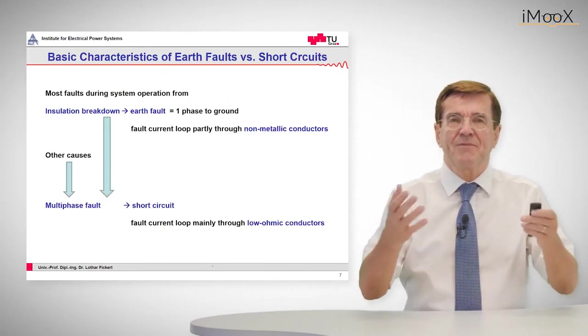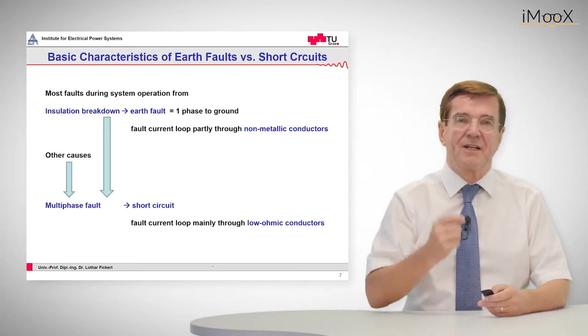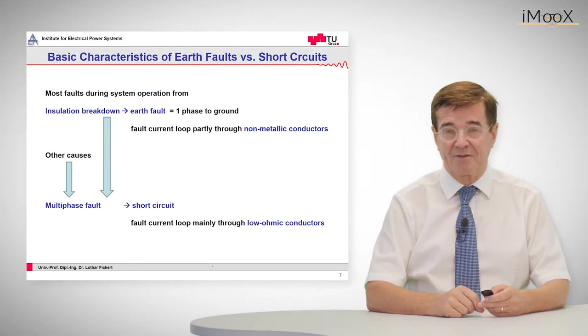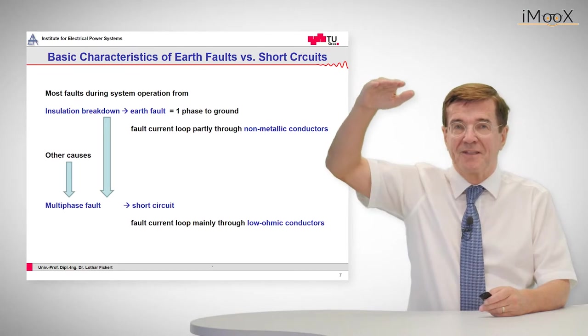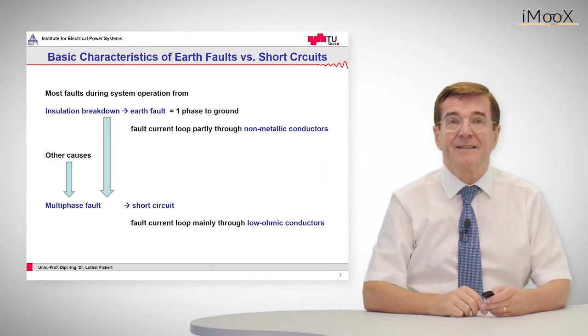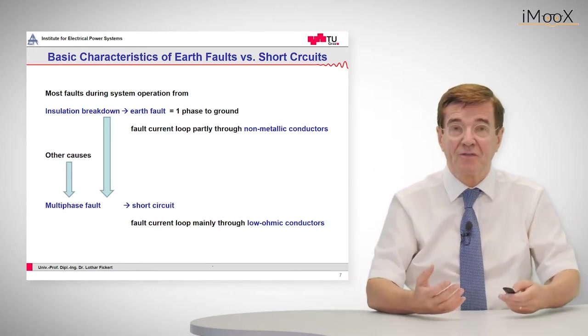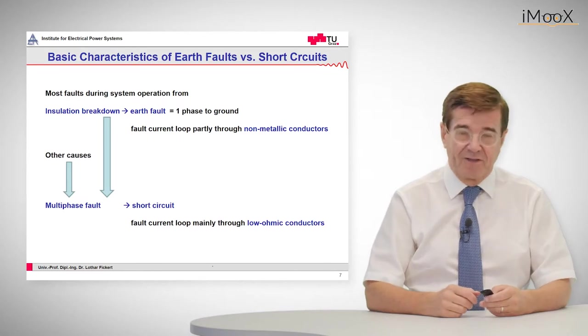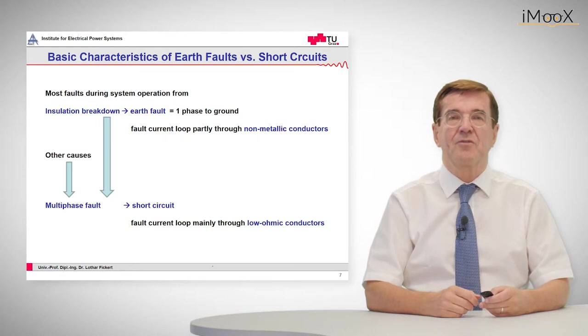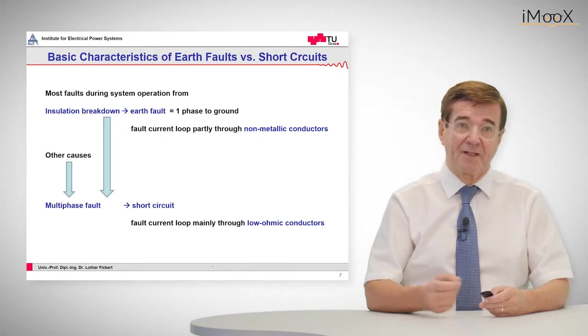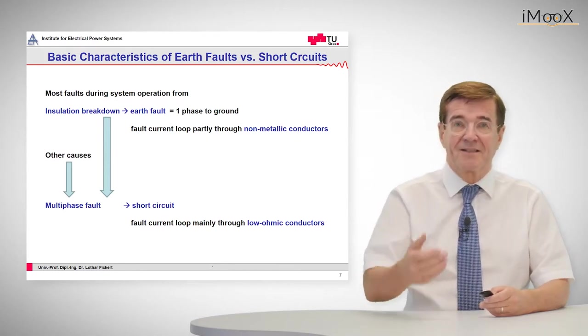Now let's see. If something happens, most faults start during operation either from insulation breakdown or from other causes. An insulation breakdown always happens at the maximum height of the sinusoidal waveform, and this leads to a single phase to ground failure. If such a fault evolves due to arc extension or other causes, we may arrive at short circuits, which means we have fault current loops mainly through low ohmic conductors. In contrast, in earth faults, in most cases we have non-metallic conductors that conduct this current.